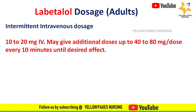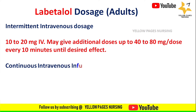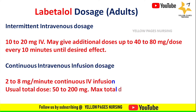In case of continuous intravenous infusion dosage, 2 to 8 milligram per minute continuous IV infusion is given. The usual total dose is 50 to 200 milligram and the maximum total dose is 300 milligram.